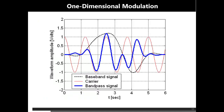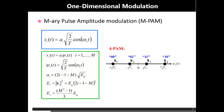Now we discuss the concept of M-ary pulse amplitude modulation, and then we will discuss the process of demodulation and detection. The generalized framework for the representation of the transmitted pulse in the form of basis functions remains the same: S_i(t) is represented by A_i · ψ₁(t). Here, because i is from 1 to capital M, for M equal to 4, we will have four different values of A_i. The basis function remains the same; only the values of A_i change to generate four pulses, as compared to the binary case where we have only two pulses.